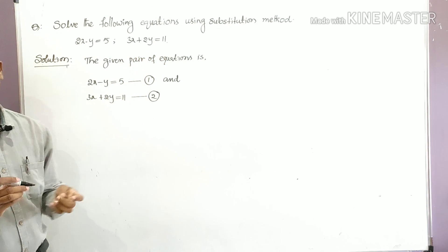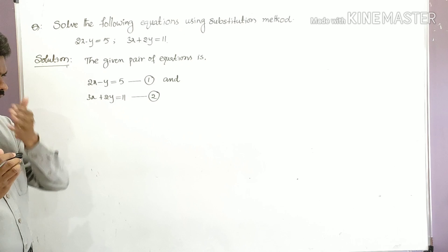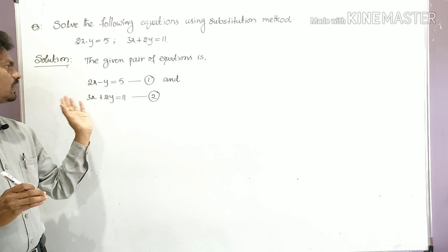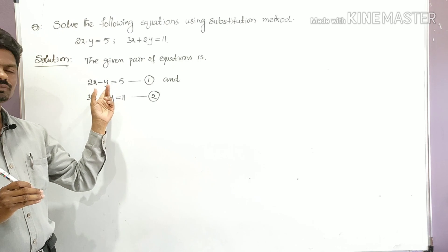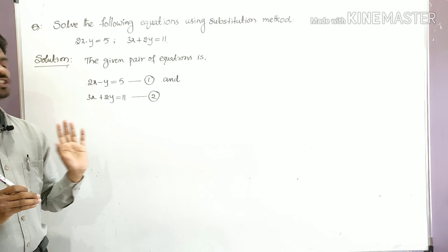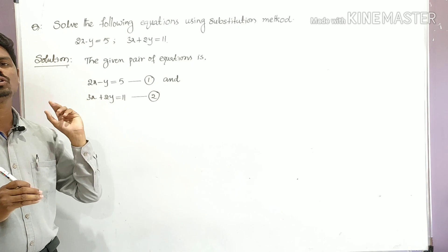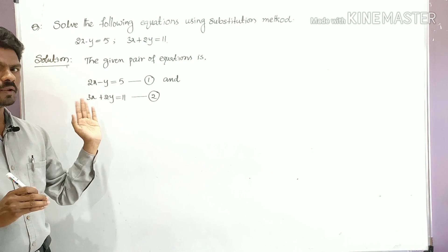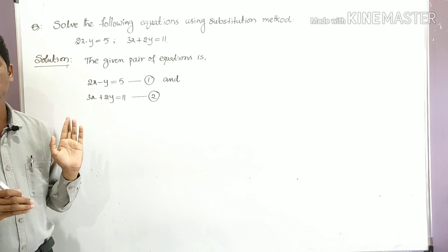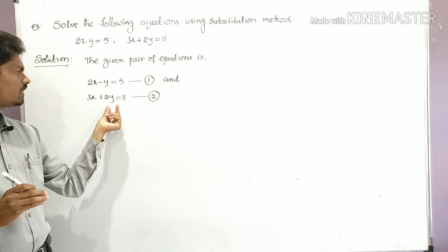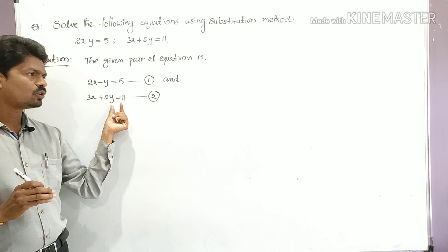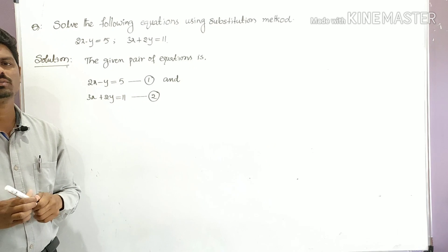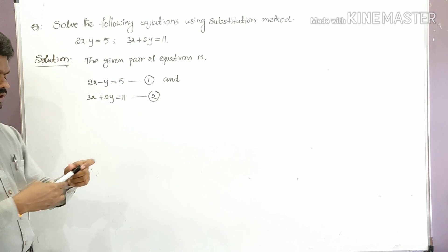Now we have to find the solution using the substitution method. From equation one, we find the value of y in terms of x, then substitute that value of y into equation two to get the x value. So first we take equation one and find y in terms of x.